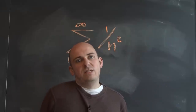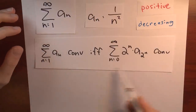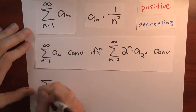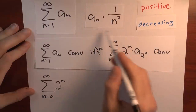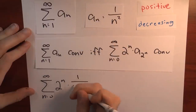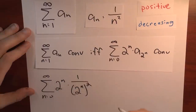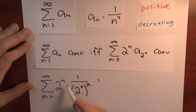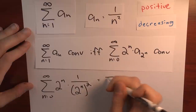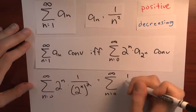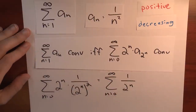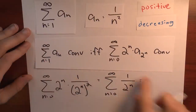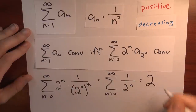What is the condensed series in this case? It's the sum n goes from 0 to infinity of 2 to the n times 1 over (2 to the n) squared. That simplifies: 2 to the n times 1 over 2 to the 2n is just the sum of 1 over 2 to the n, n from 0 to infinity. Does that converge? Yes — it's a geometric series, and we've already seen it converges with value 2.